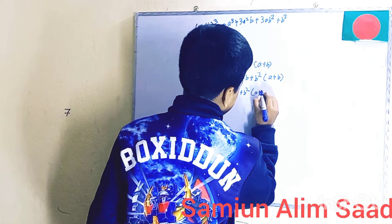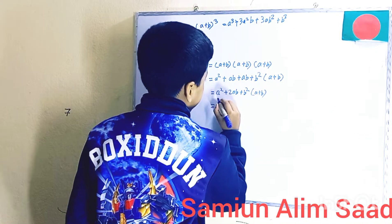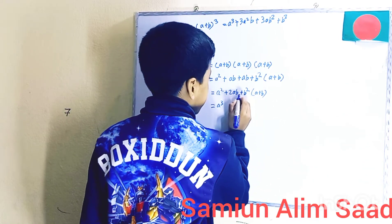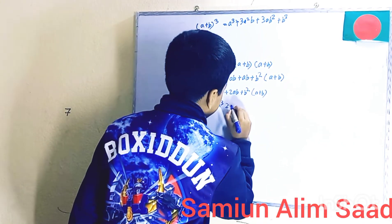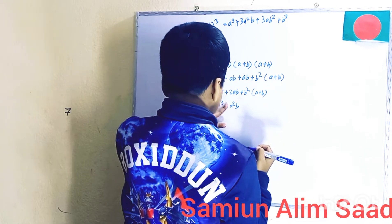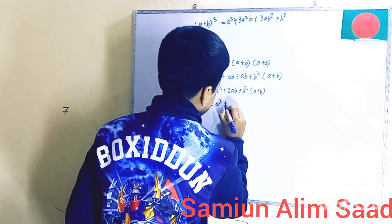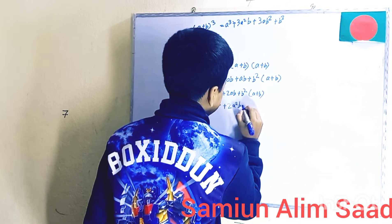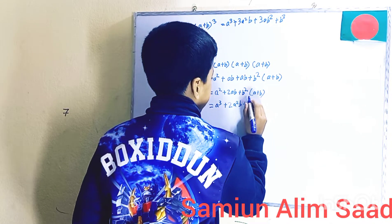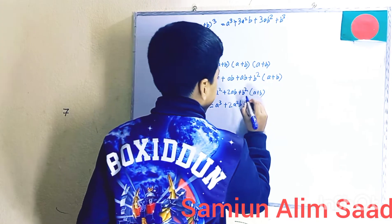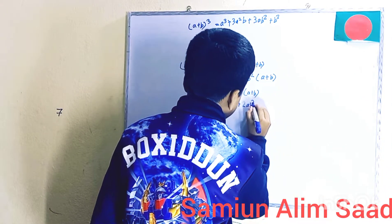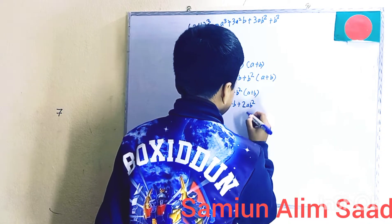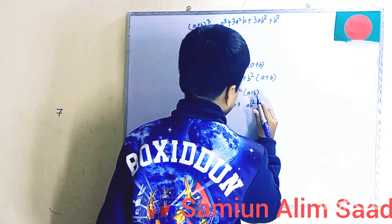Then A times A square is A cube. A times 2AB is 2A square B. Plus A times B square is AB square. So that gives us A cube plus 2A square B plus AB square.